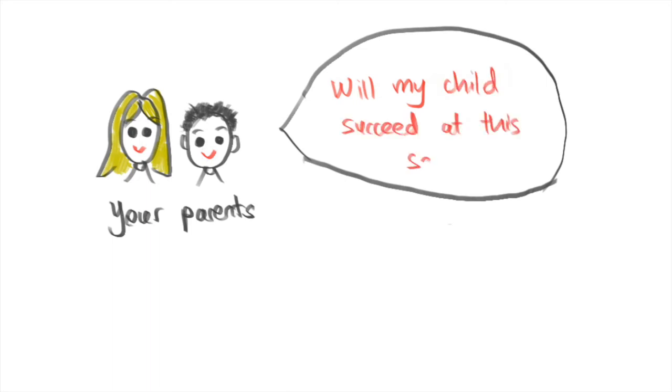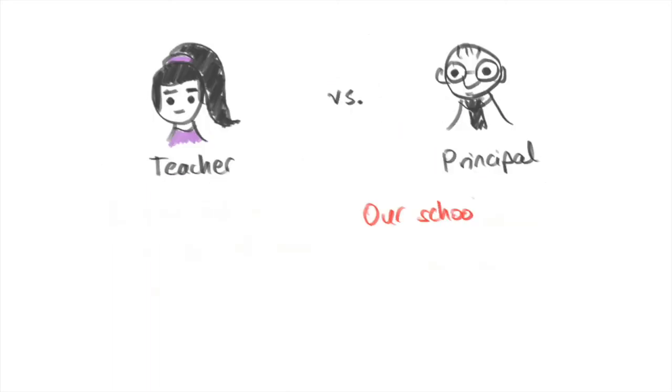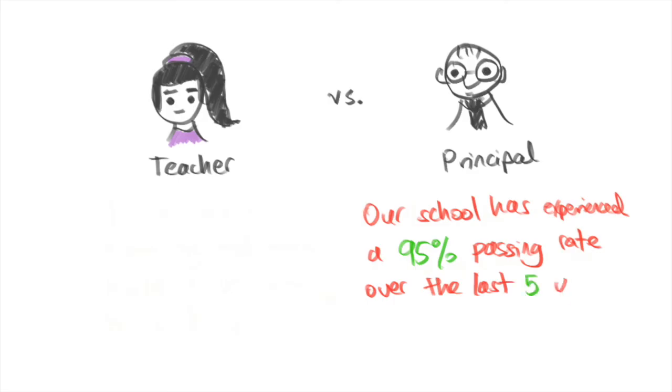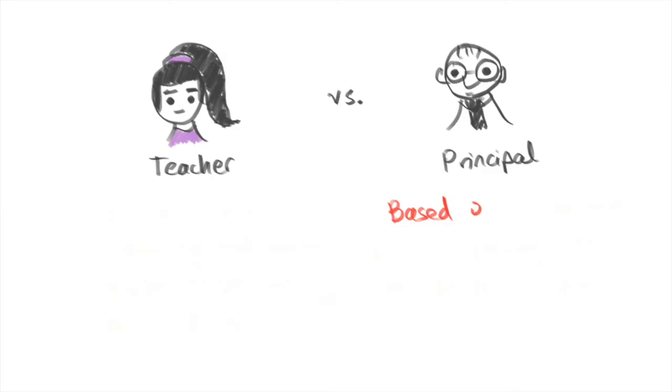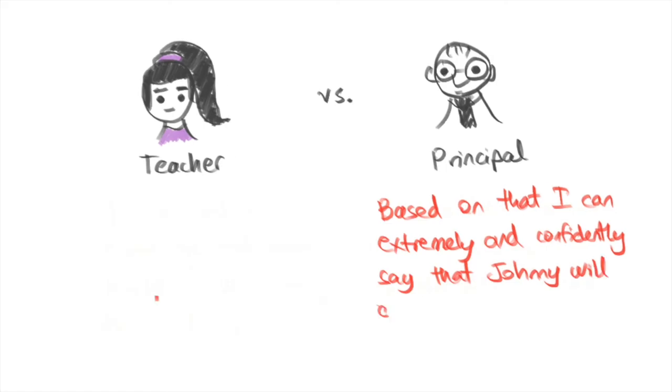If your parents ask the principal question two, the principal will say straight away, 'Our school has experienced a 95% passing rate over the last five years, so I can extremely and confidently say that your child will also succeed at our school.' The principal, or the data warehouse in this case, aggregates all the data that is necessary from students, teachers, and classes, which are the databases, over time to make big bold claims or analytical statements like that one.